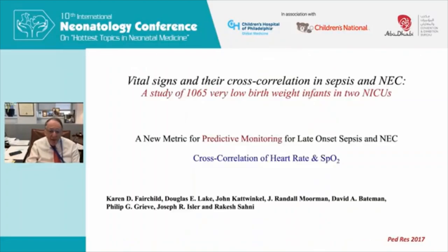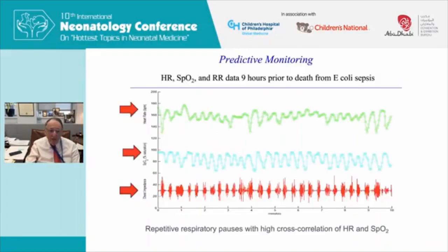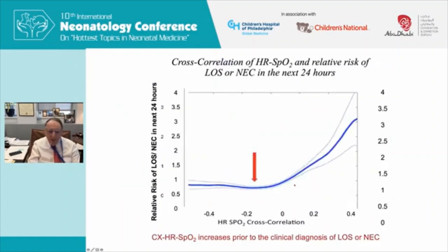We've also worked on a new way of early detection: cross-correlation of heart rate and oxygen saturation, in collaboration with our group and workers at the University of Virginia, looking at heart rate, saturation, and respiratory rate. In a healthy individual there is no correlation between those physiologic parameters. In a baby nine hours prior to E. coli sepsis you can see marked correlation in heart rate, saturation, and breathing pattern. The relative risk of late-onset sepsis or NEC is one or less when there is no good correlation, but when there is a good correlation, the risk in the next 24 hours goes up to greater than three.